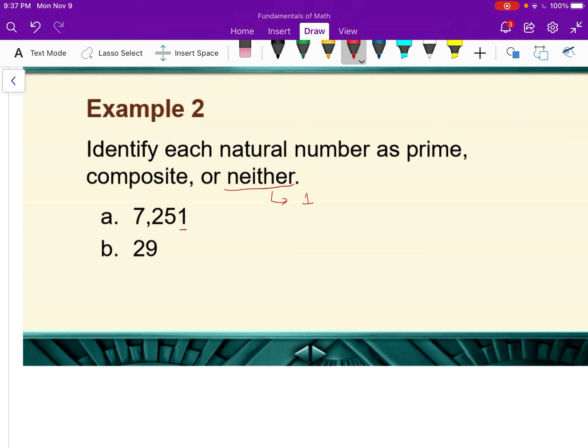No, it's not divisible by 2 because it's not even. 3? The way that we check if it's divisible by 3 is we add up the digits. 7 plus 2 is 9, 9 plus 5 is 14, plus 1 is 15.